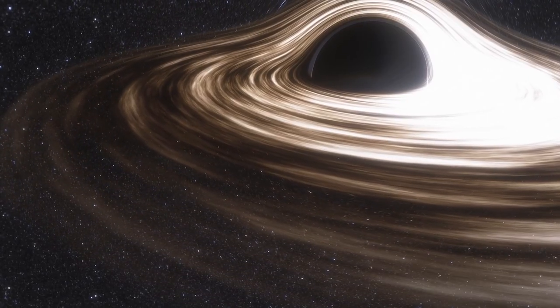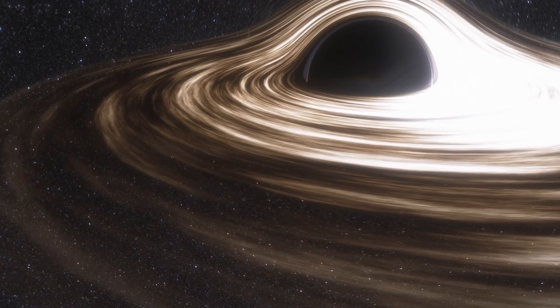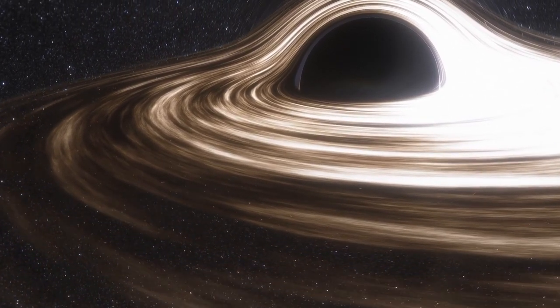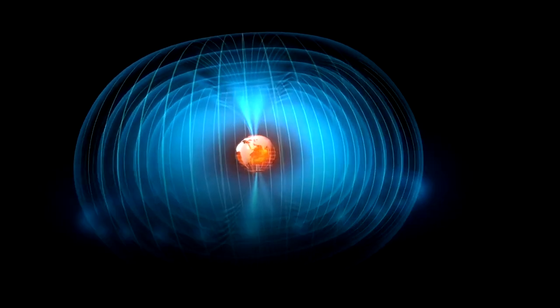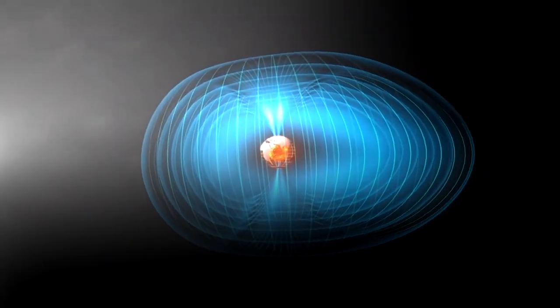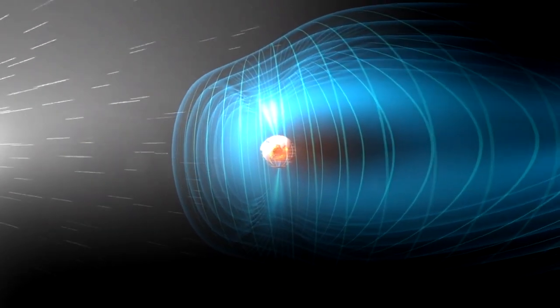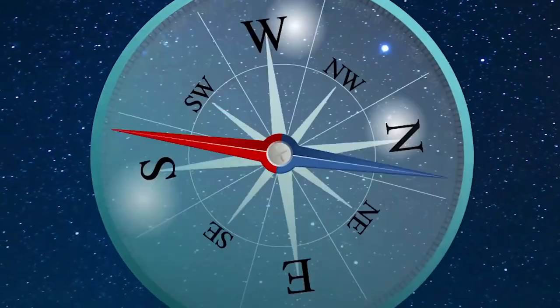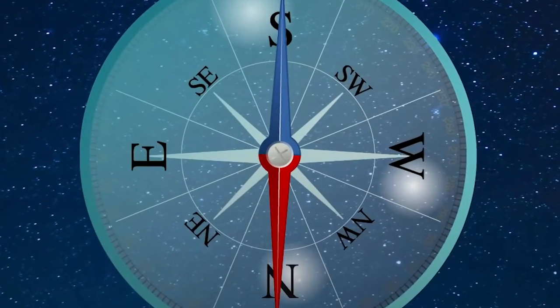As the plasma circles the black hole, the charged particles that make it up generate both an electric and a magnetic field. Scientists have learned that magnetic fields, like the ones surrounding a black hole and the Earth, can, as far as scientists know, spontaneously flip its poles.